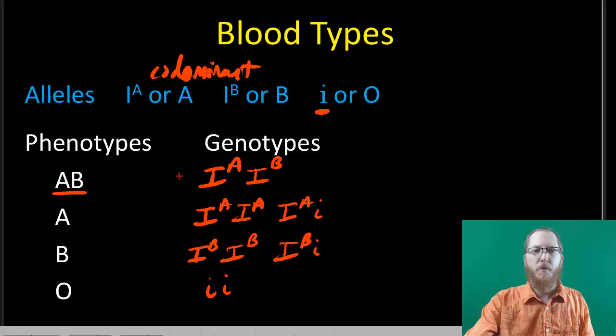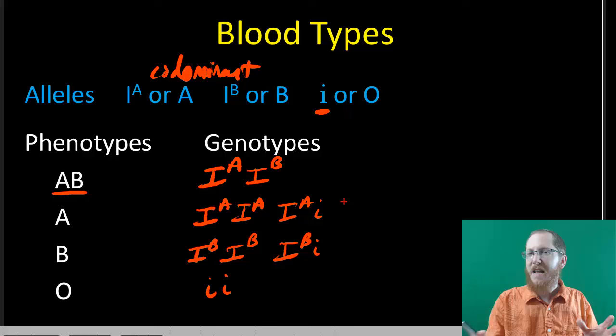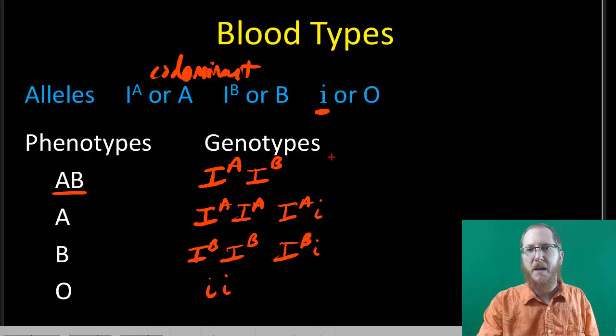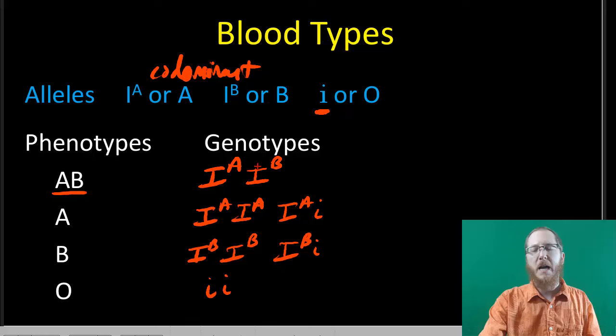We'll do some practicing with this in class, because it's interesting when you start crossing parents to figure out what their offspring could be. This was also used in forensics to help identify suspects — it's not perfect, but it can eliminate a large group of people. You'll often see problems where I give you a child's blood type and ask which parents could have produced it, or vice versa.